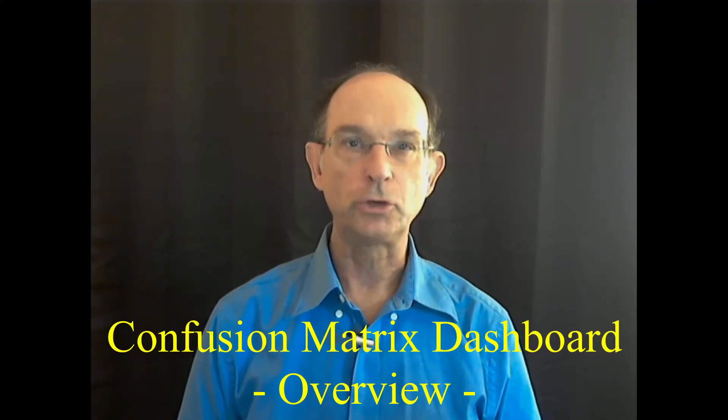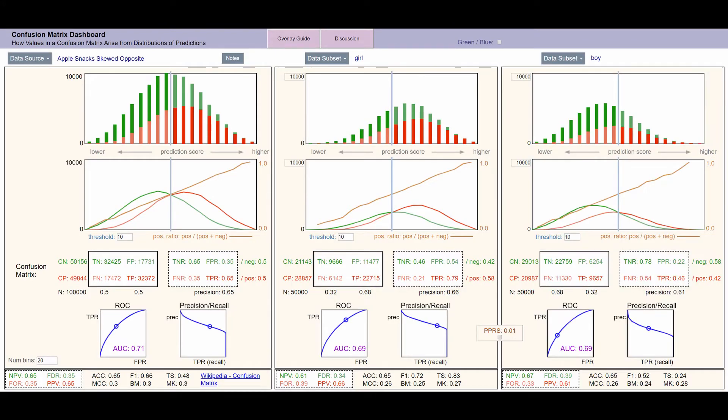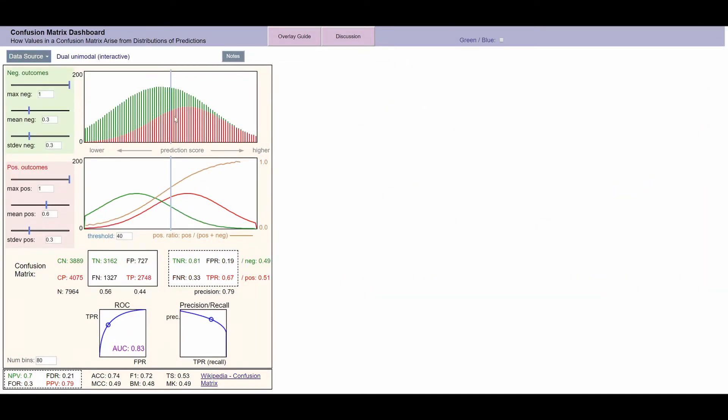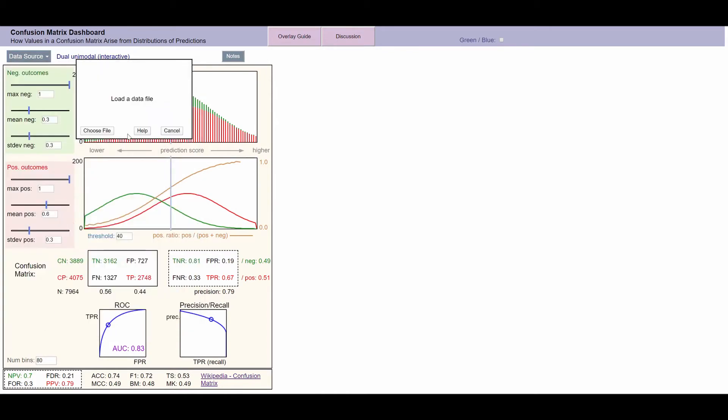Here is a quick overview of the Confusion Matrix dashboard. The dashboard can hold one, two, or three panels. The leftmost panel is the main panel. It contains an entire dataset. There are some preloaded datasets, and you can load your own data.